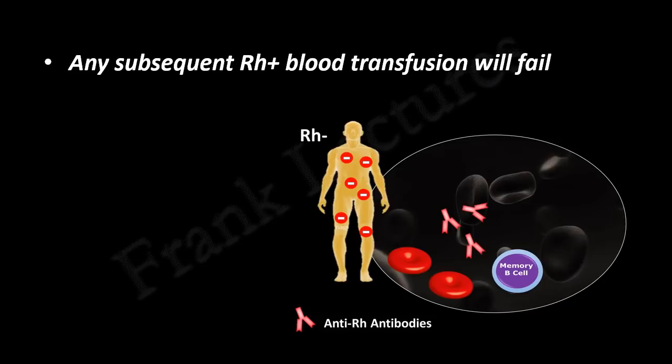This is because the recipient has been exposed to RH antigen in a previous transfusion, and therefore anti-RH antibodies and RH-specific memory B cells are present in the recipient's body. When the RH antigen is encountered again, these memory B cells get activated and rapidly produce anti-RH antibodies.